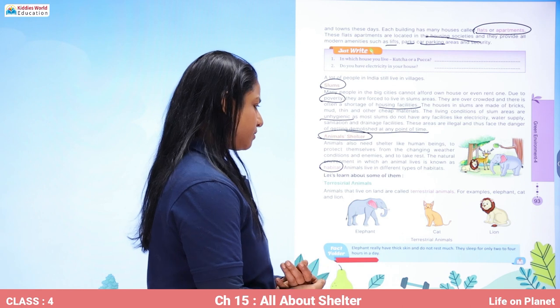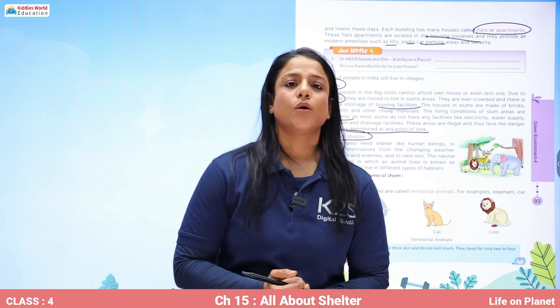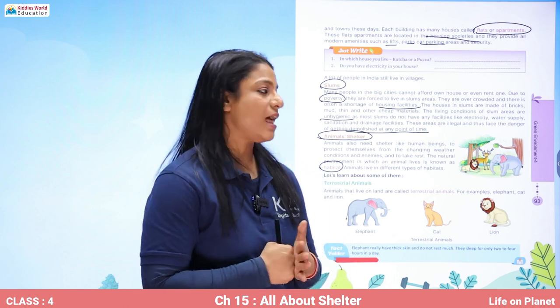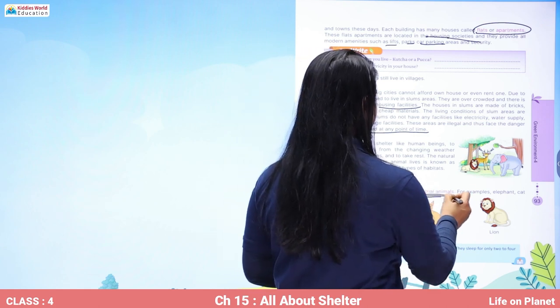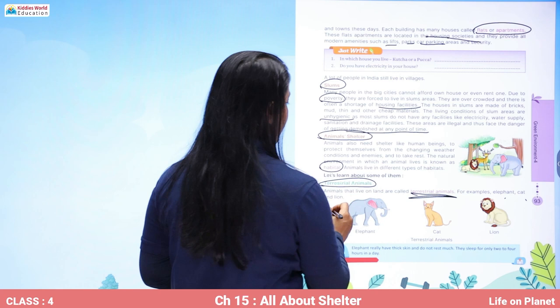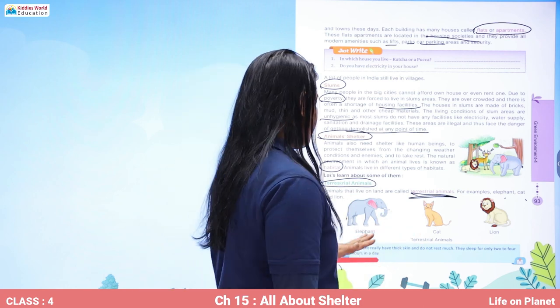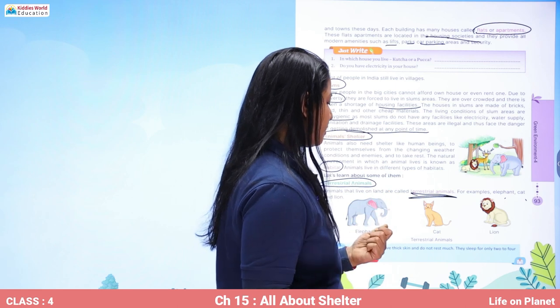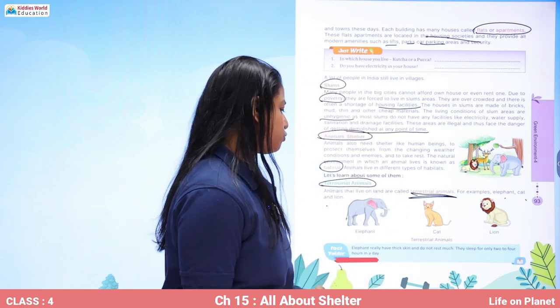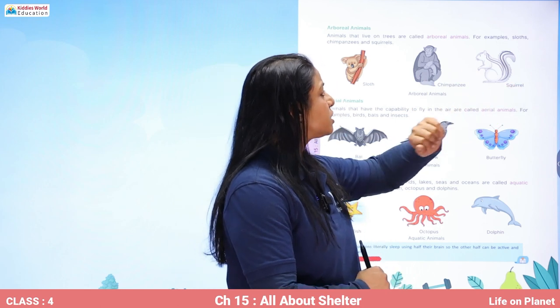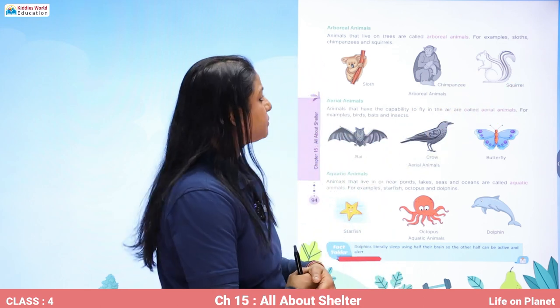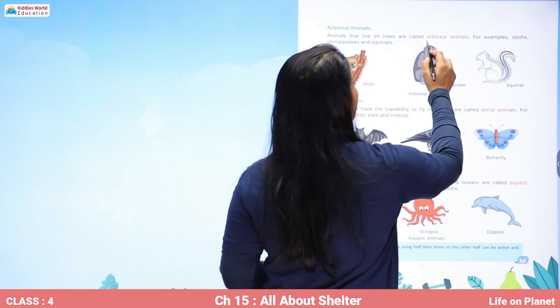Animals live in different types of habitats. Animals living on land are called terrestrial animals — for example, elephant, cat, and lion. Arboreal animals are those who live on trees, like sloth, chimpanzee, squirrel, and koala. Animals that live on trees are called arboreal animals.